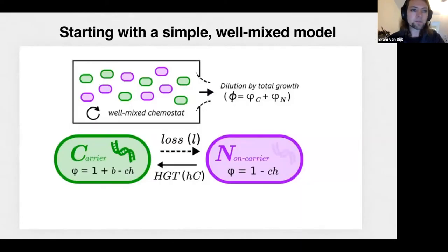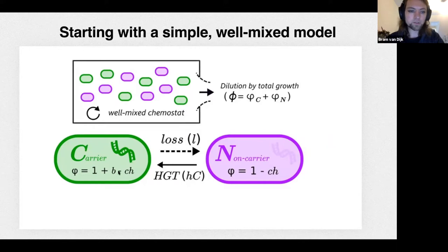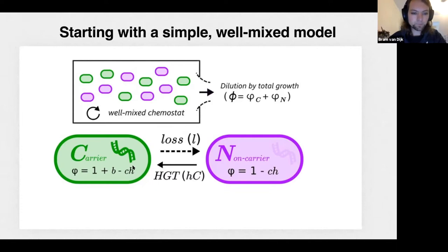We start with a very simple model of carrier cells that carry a beneficial gene giving benefit B. Carrier cells grow faster than non-carrier cells. If the gene is lost via parameter L, they become a non-carrier and grow slower. Non-carriers can interact with carrier cells at rate H and become a carrier again — this represents horizontal gene transfer. We assume HGT comes with a cost that lowers the growth rate φ. We have a well-mixed model diluted by the total growth rate, allowing simple analysis.